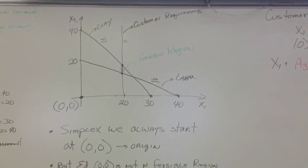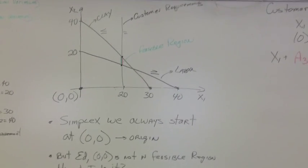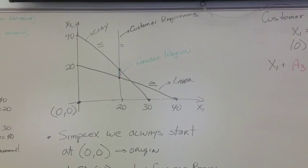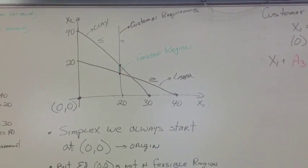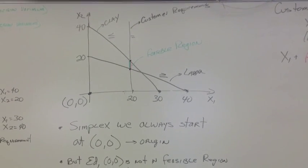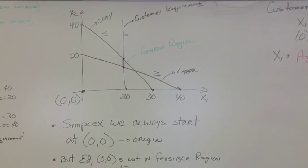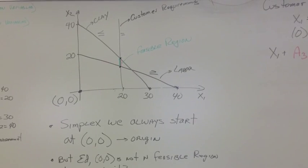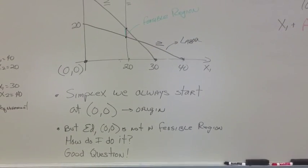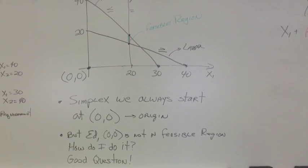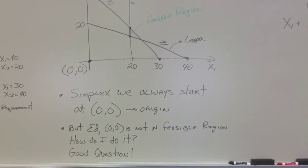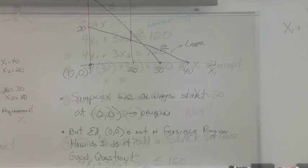Here I just graphed out what our constraints would look like. You'll notice the feasibility region is along the line x1 equals 20 — because our clay was a less than or equal to, it has to be towards the origin; labor was a greater than or equal to, so it's got to be above; and when we have an equal to it has to be on the line. So our feasibility region is that line colored in green and red. One thing with simplex is we always start at 0,0 or the origin, but as you can see here, the origin 0,0 is not in our feasibility region. So I'm going to go through the three inequalities and show how we adjust for them mathematically.